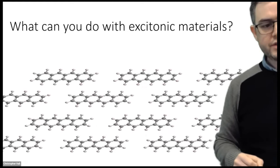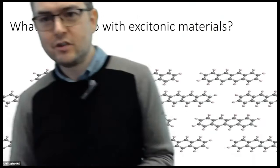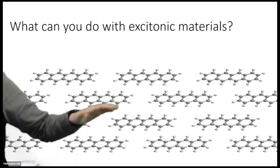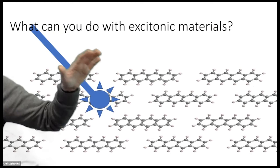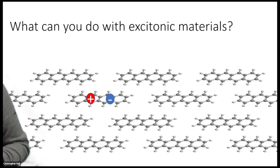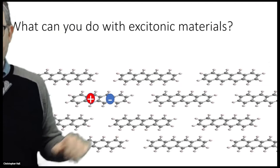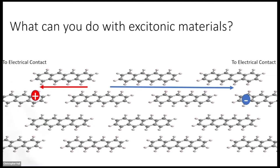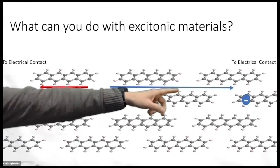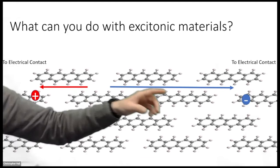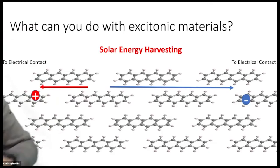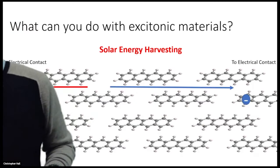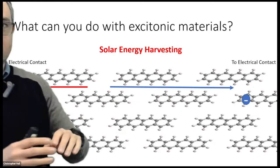Now that we know what an exciton is, let's take a look at some excitonic material. Here we have a film of molecules and a photon has hit our film. One of these molecules has absorbed that photon and we've generated an exciton. In this film, this exciton is split into two. We've got an electron over here and a vacancy over here, and they find their way to an electrode. This is what we'd call a solar energy harvesting device or a solar cell based on excitons.